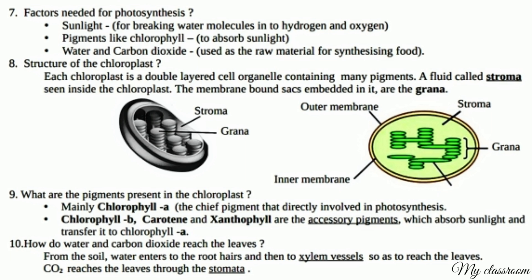Structure of the chloroplast: Each chloroplast is a double-layered cell organelle containing many pigments. A fluid called stroma is seen inside the chloroplast. The membrane-bound sacs embedded in it are the grana.